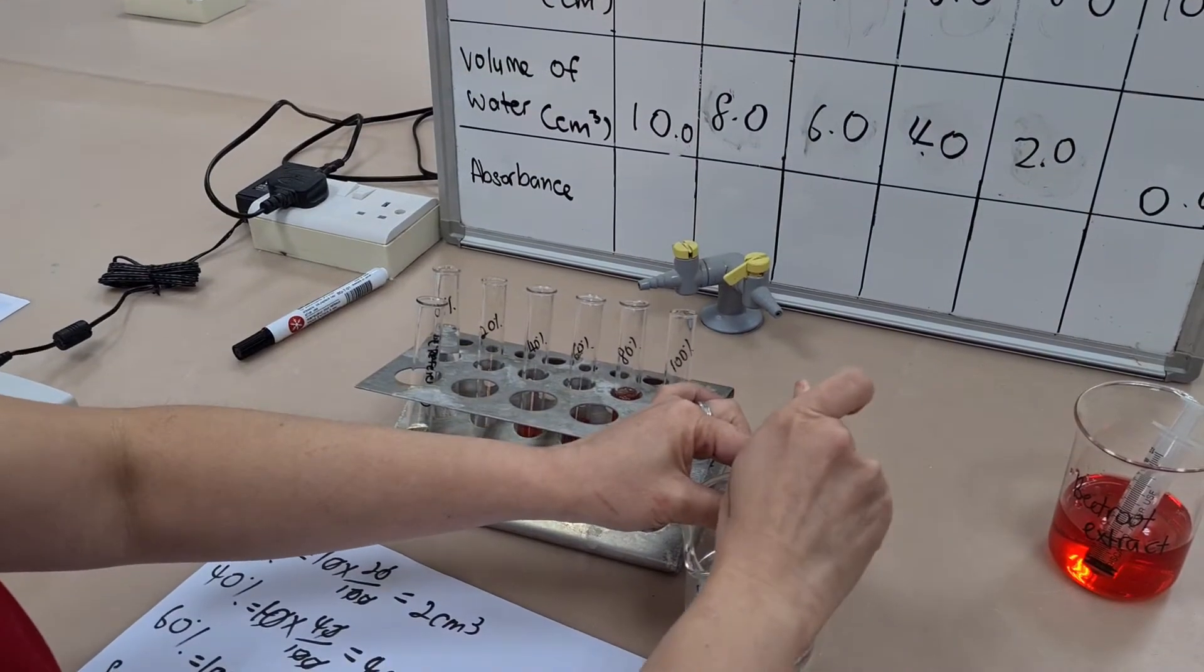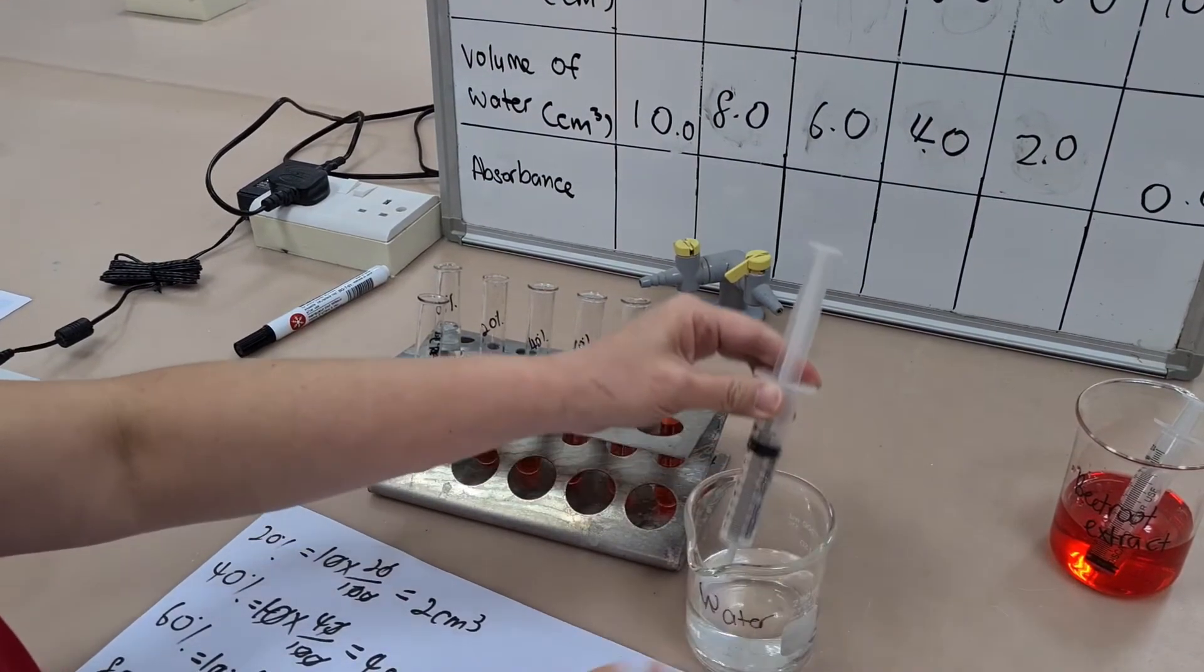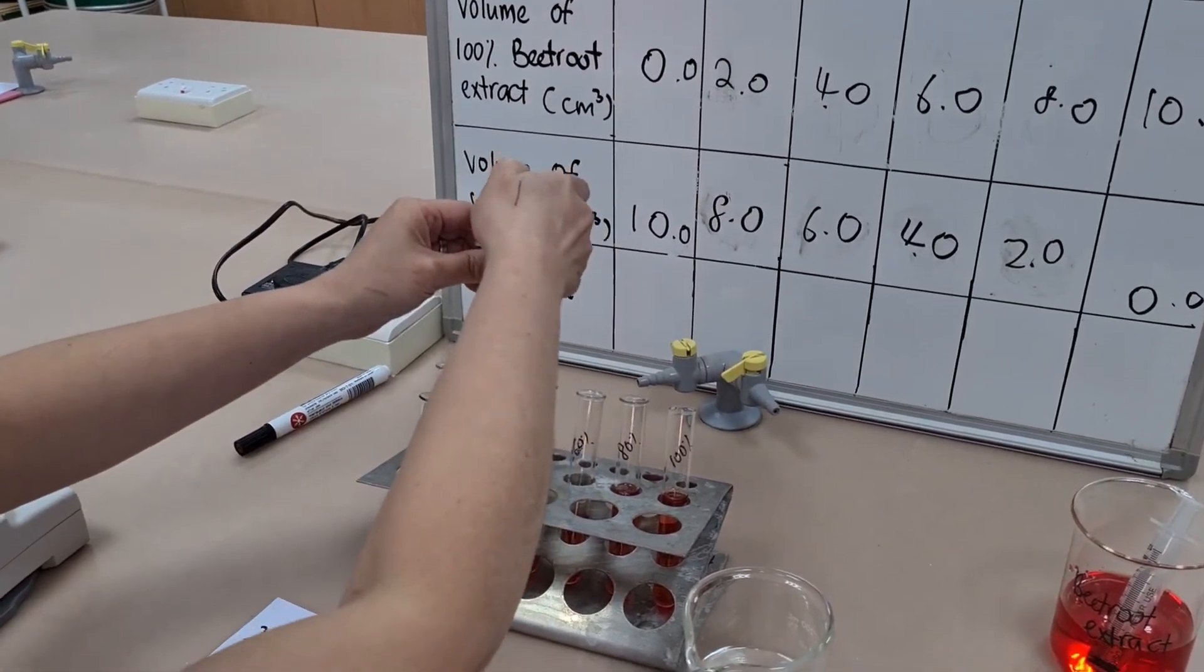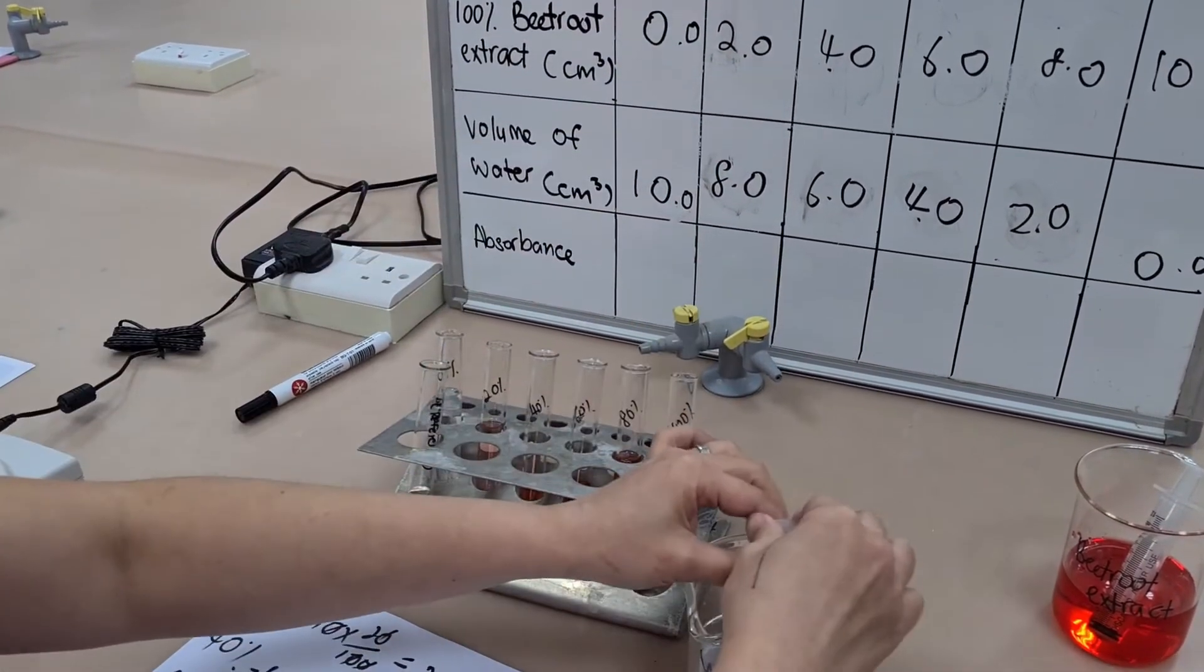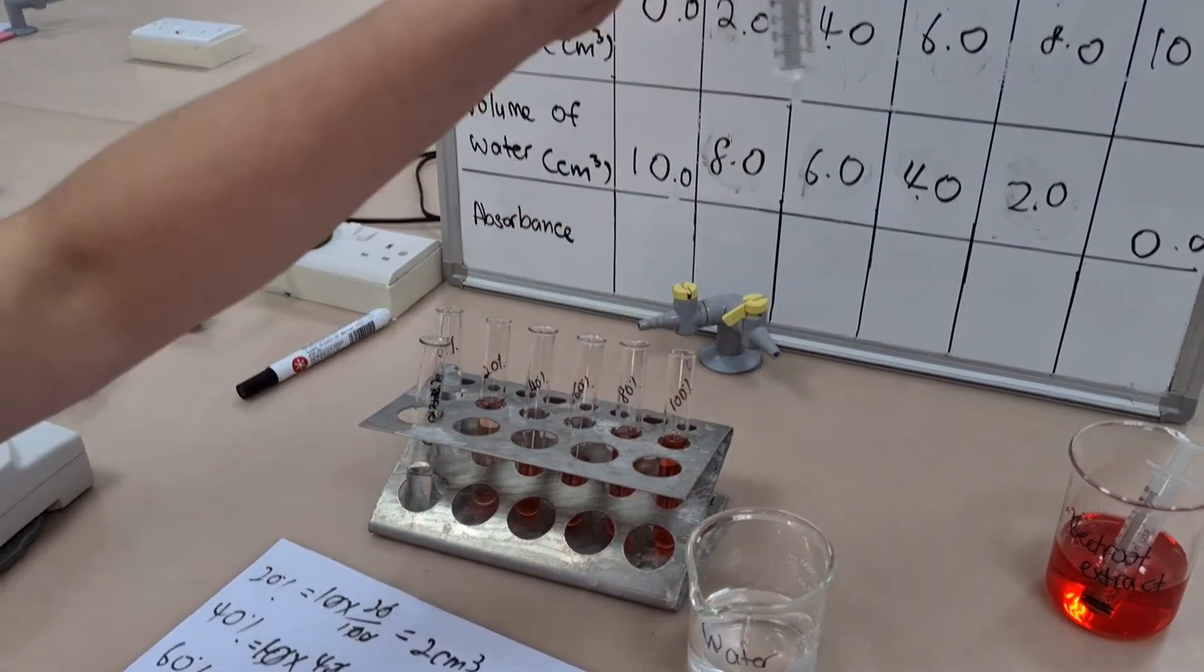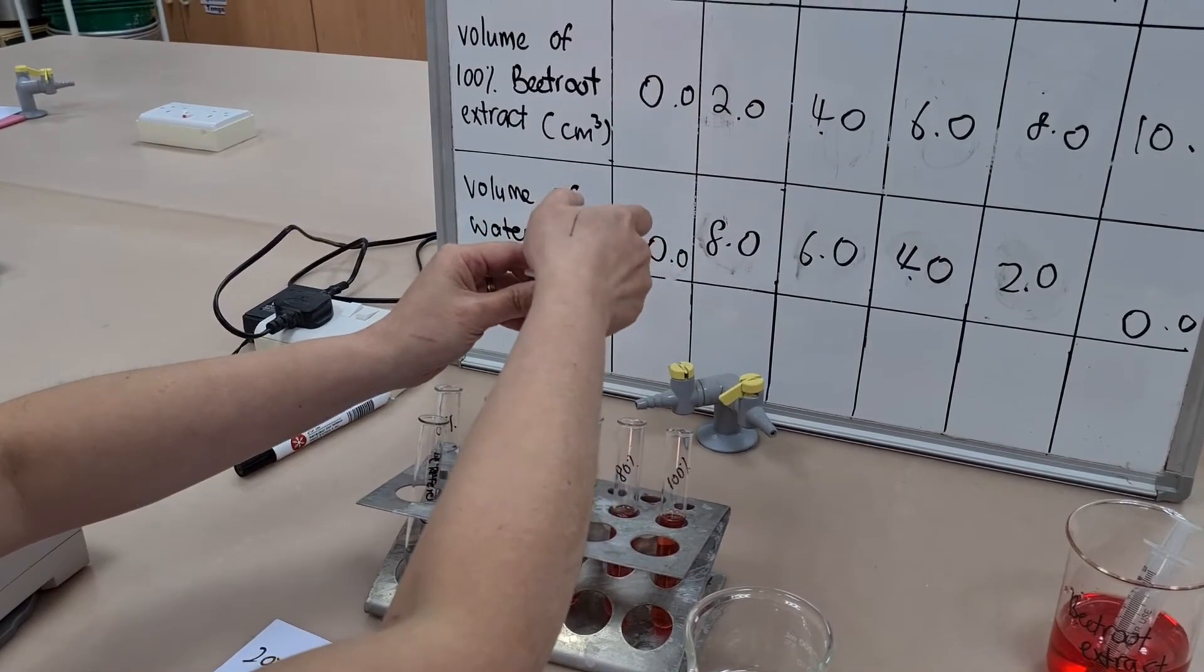If I was making 20 mils of each dilution, I would just double those quantities. So instead of two mils to make 20 percent, I'd use four mils of the extract and 16 mils of water.